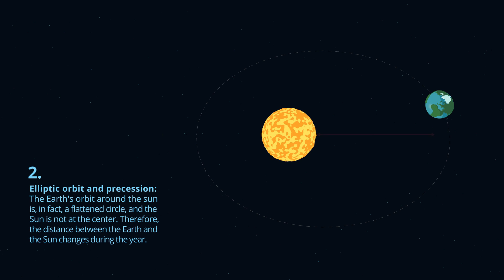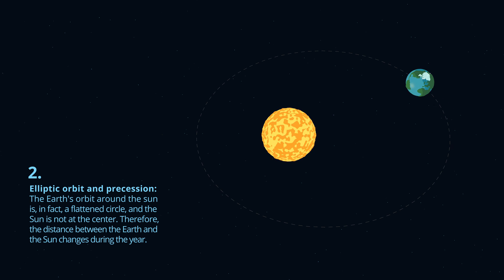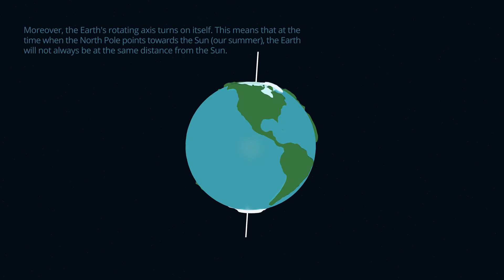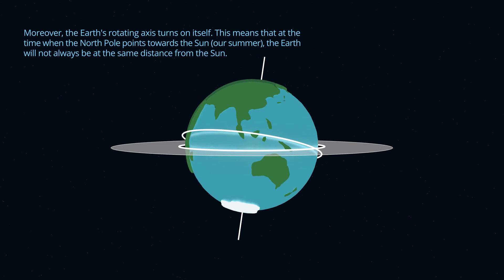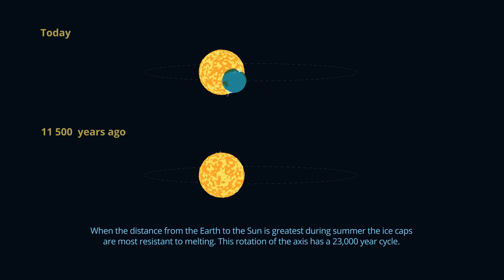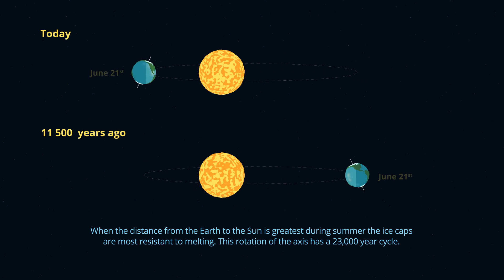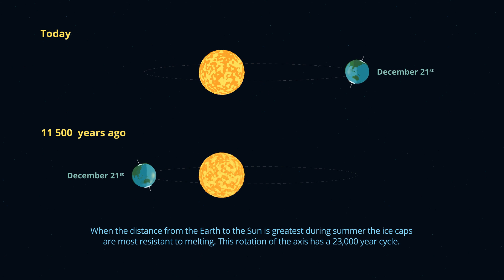Elliptic orbit and precession. The Earth's orbit around the Sun is in fact a flattened circle and the Sun is not at the centre. Therefore, the distance between the Earth and the Sun changes during the year. Moreover, the Earth's rotating axis turns on itself. This means that at the time when the North Pole points towards the Sun — our summer — the Earth will not always be at the same distance from the Sun. When the distance from the Earth to the Sun is greatest during the summer, the ice caps are most resistant to melting. This rotation of the axis has a 23,000-year cycle.